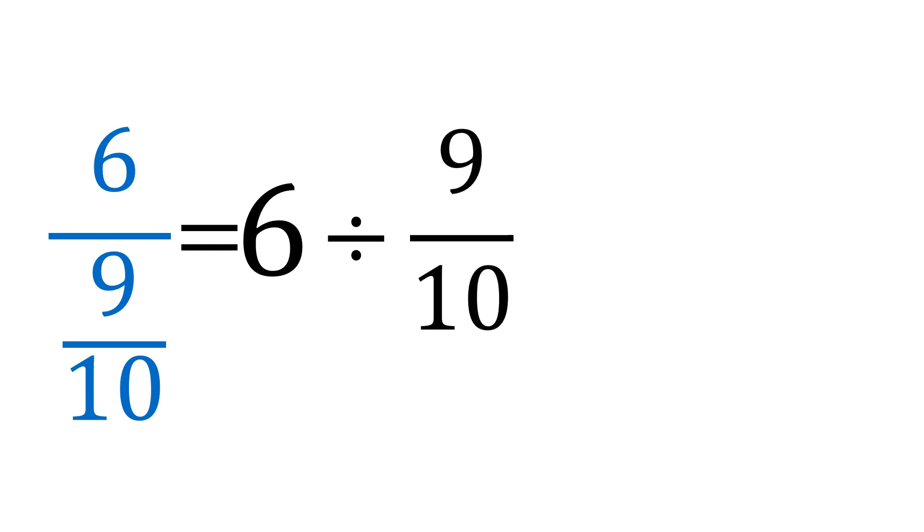How about this? 6 over 9 tenths. Let's simplify. This is equal to 6 divided by 9 tenths. First, make the whole number into a fraction by putting a 1 in the denominator. Then, follow the procedure for dividing fractions.